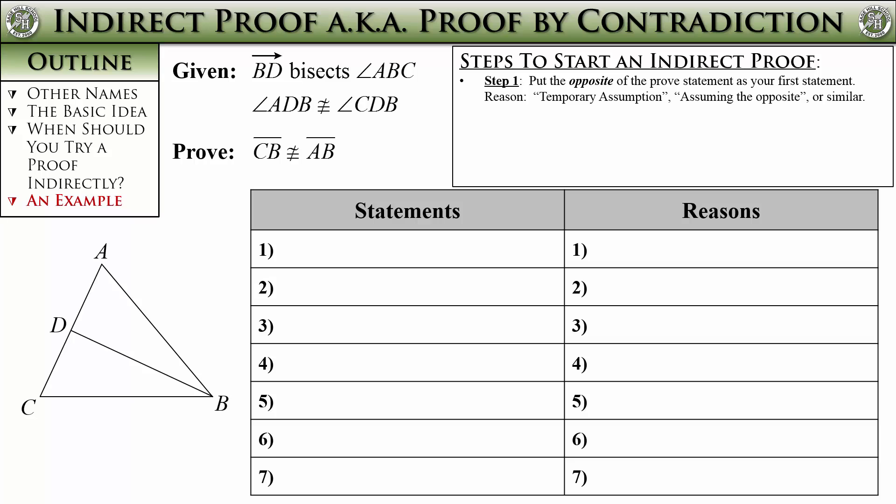These are the steps to start an indirect proof — do them every single time. Our first step is to always put the opposite of the proof statement first. The proof statement is that line segment CB is not congruent to line segment AB, so the opposite is that line segment CB is congruent to line segment AB. That's our first statement. The reason we put is 'temporary assumption' or 'assuming the opposite' or something similar — there is no standard phrasing, just get that idea across. In an indirect proof we are trying to show that the opposite of the prove must be false, so the opposite of the prove is our starting point.